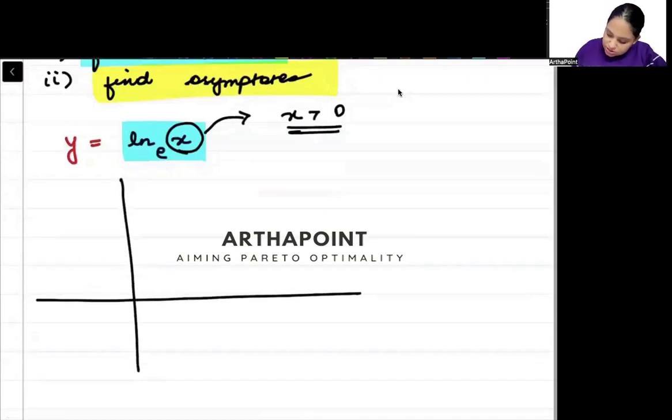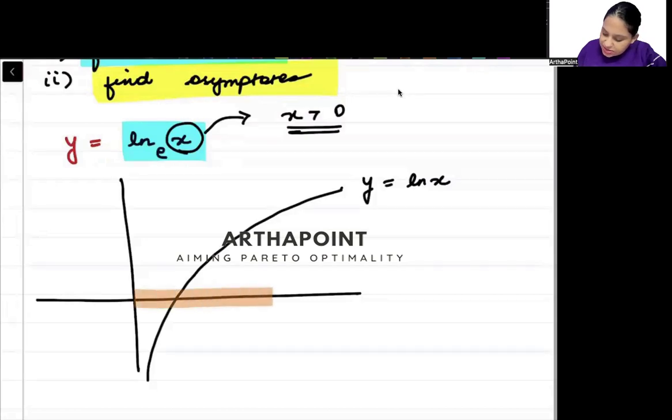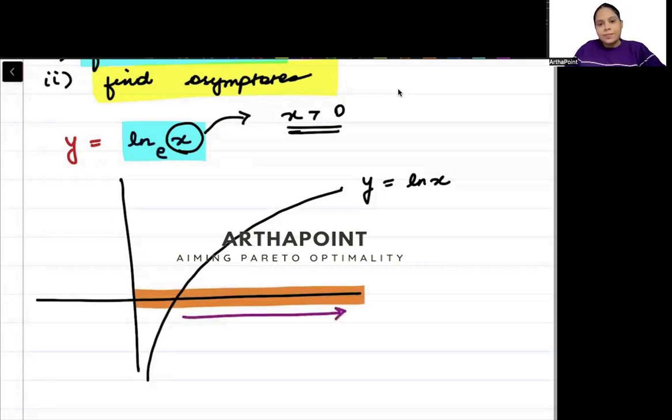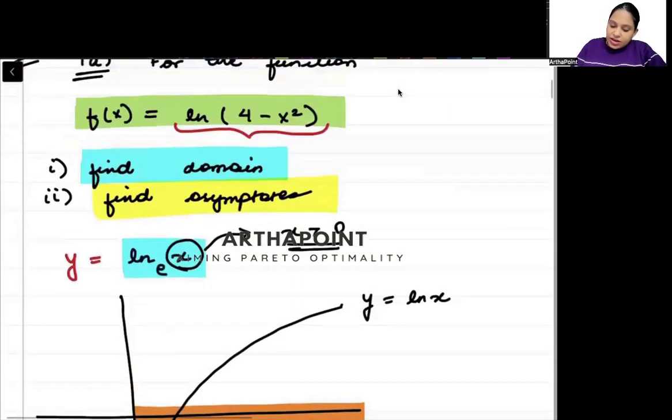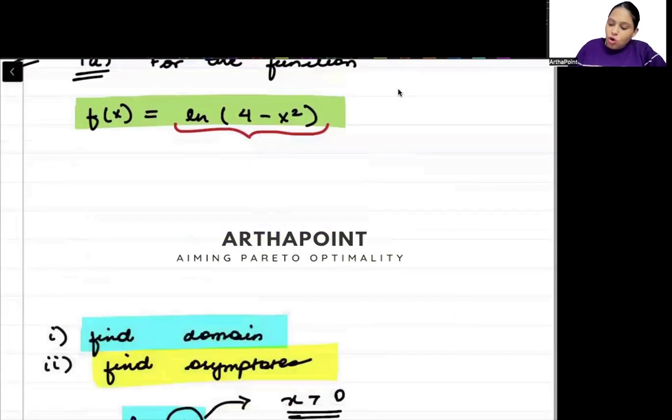If I want to plot this log function, this is y equals ln(x). It is only defined as long as x is greater than 0, for positive values of x. Now try to see that in this function, log x is not there. What is there inside the log? This part: 4 minus x square. So we have log of 4 minus x square.